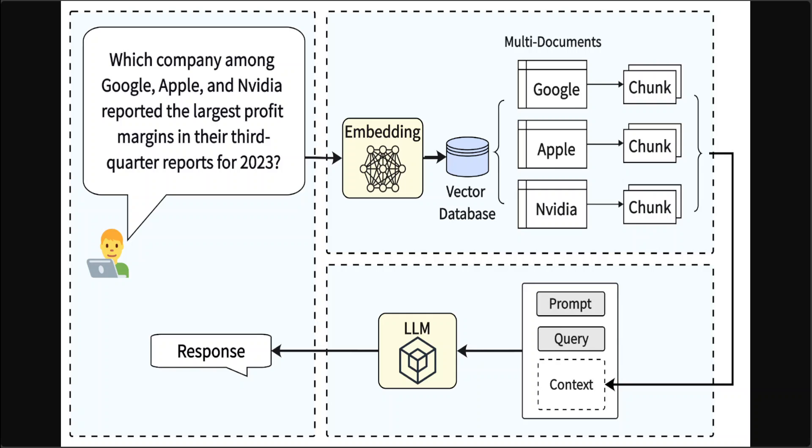This process is known as a multi-hop query. For example, consider financial analysis using a database of financial reports. A financial analyst might query which company among Google, Apple, and Nvidia reported the largest profit margins in their third quarter reports of 2023, or any performance query about a company over time. These queries require evidence from multiple documents. Due to the multifaceted nature of these queries involving information from various sources, traditional similarity matching methods like cosine similarity between query and financial report chunk embeddings might not be optimal. That is where the multi-hop process really shines.